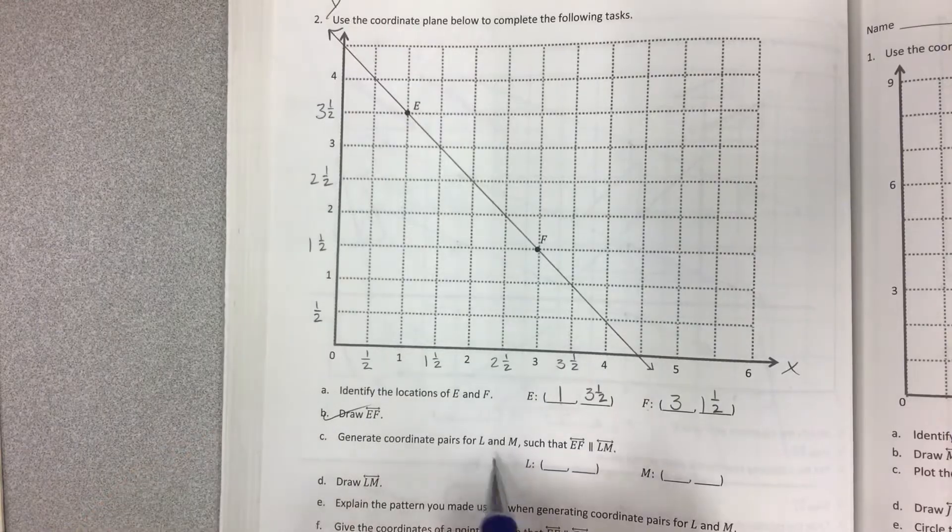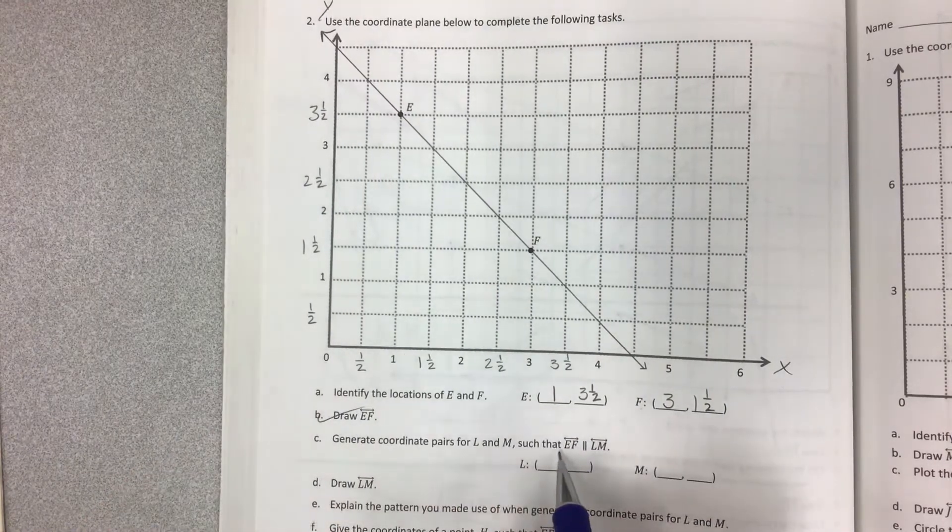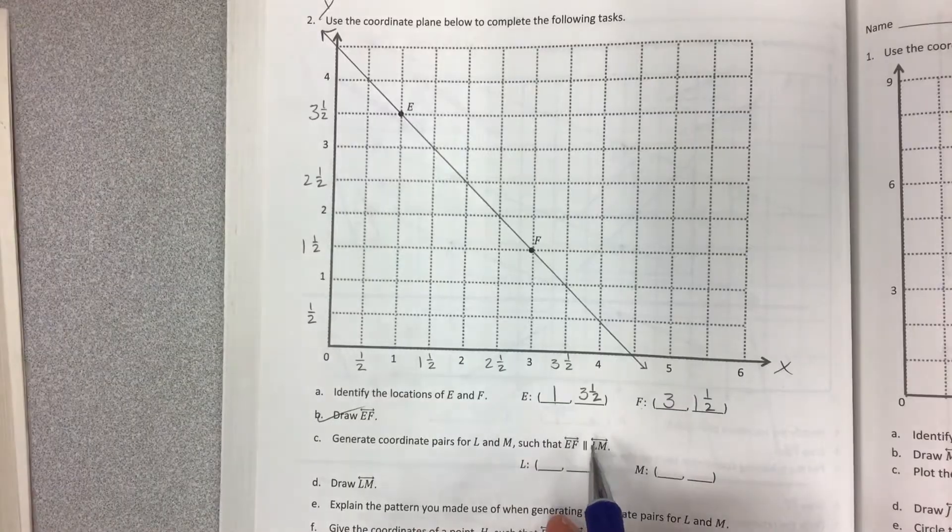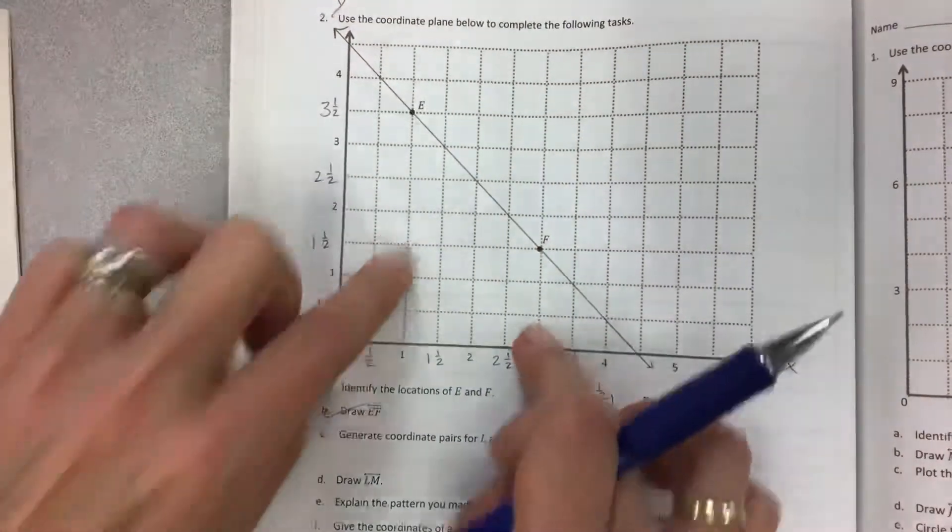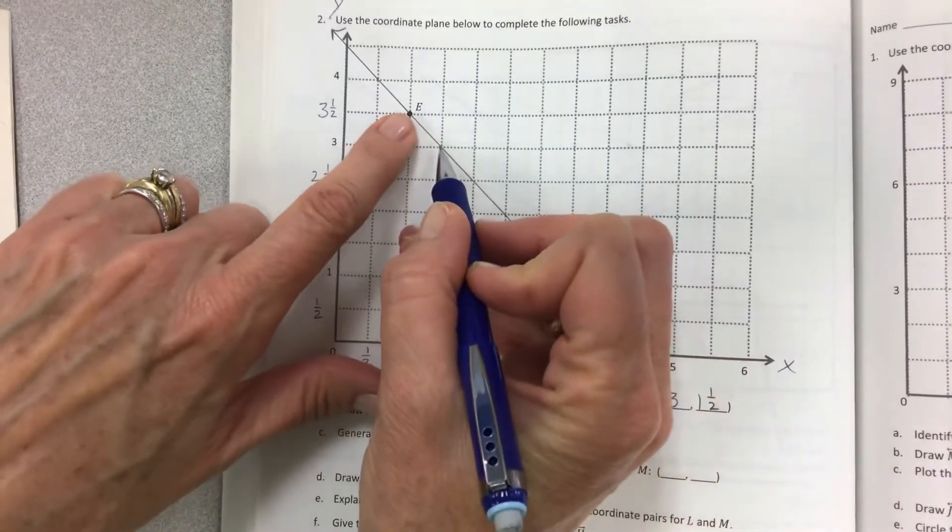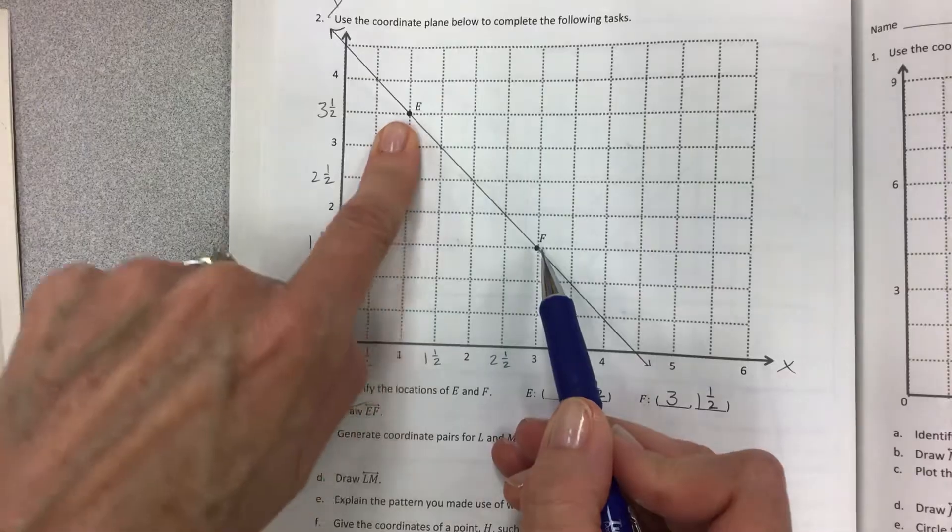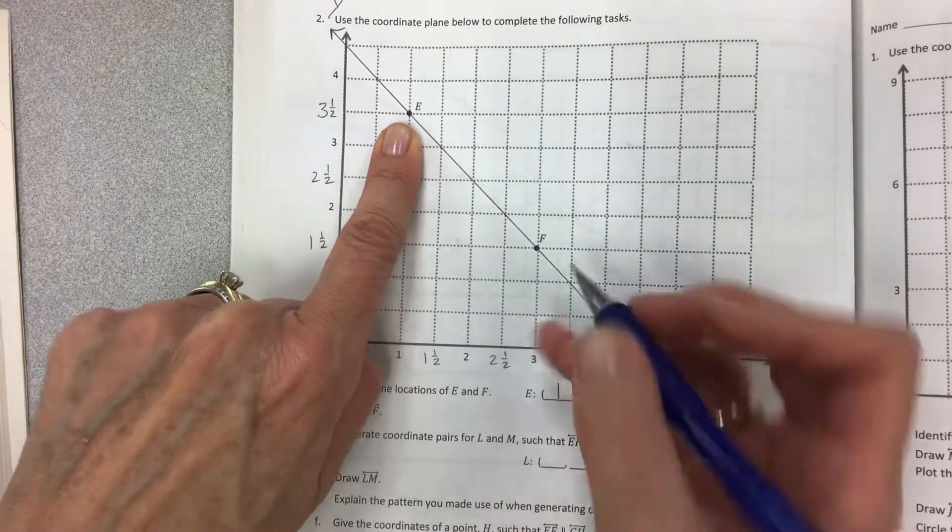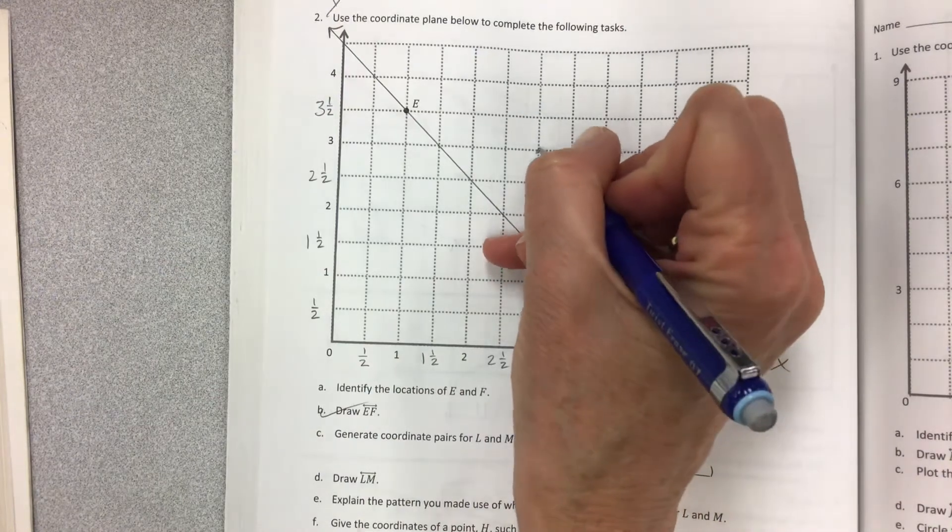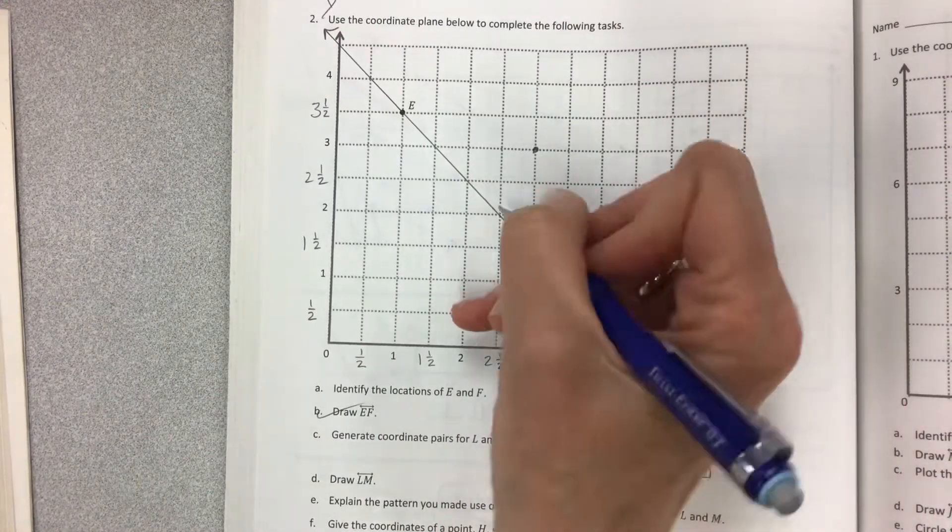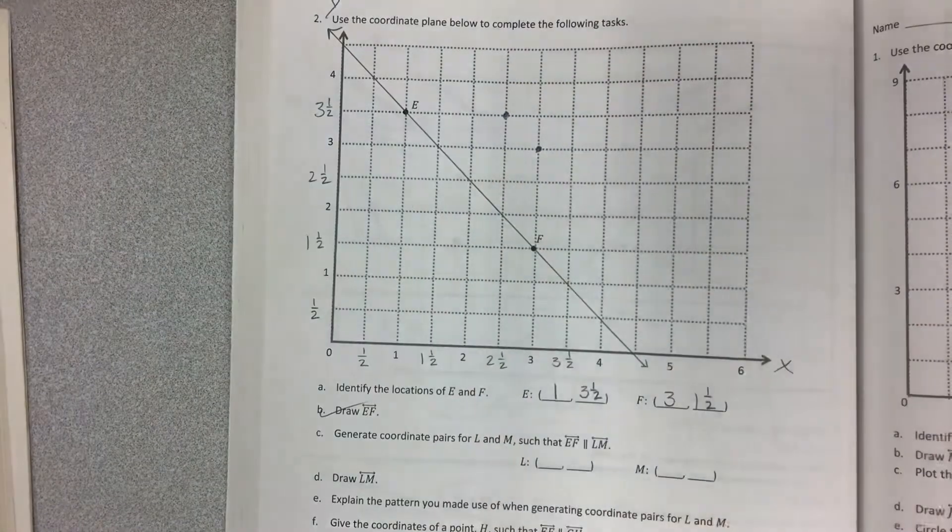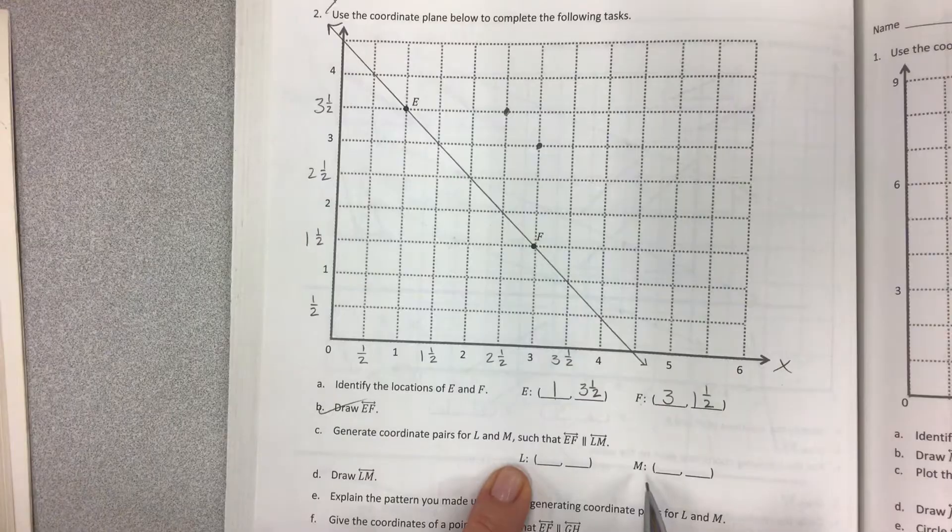Generate coordinate pairs for L and M. You're going to put two new points on there such that line EF is parallel to LM. So if you would like you can go above or you can go below. So you get to choose. It does not matter but notice that you have all these intersections that you can choose from. So you don't necessarily have to use point EF to go up although you can because there's lots of room on the graph right here. So let's say I use point F and I go up 1, 2, 3. I can put a point there. Okay well I need to have two points or more to make the line. So if I go from here up 1, 2, 3, I can put a point there.